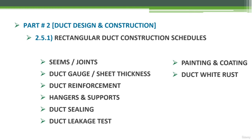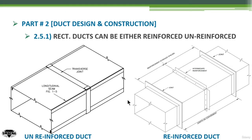Rectangular duct can be reinforced or non-reinforced. In this figure we have the reinforced duct on the left side of the screen, which consists mainly of three parts: part one is the sheet metal of the duct itself, part two is the longitudinal seams used to assemble the sheet metal on the longitudinal axis, and transverse joints are used to assemble the duct boxes — since duct is typically fabricated in five-foot or 1.2-meter sections.